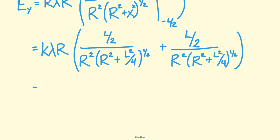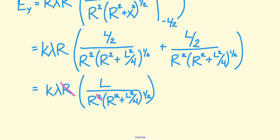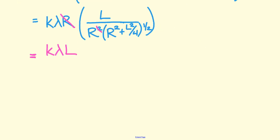Now, if I take a look at what I have in parentheses here, you'll notice that it's two of the exact same term. So that means I can simplify it by writing it as L divided by R squared times R squared plus L squared over 4 to the 1 half. Additionally, I can cancel out this R with one of my R's that's in my denominator. So I end up having K lambda L in my numerator divided by R times R squared plus L squared over 4 to the 1 half.